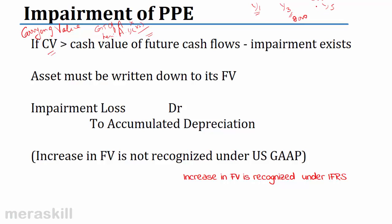Then I look at the future cash flows. In year 4, I expect the cash flow from operating this machine to be $2,000, and in year 5, I expect it to be $3,000. So $2,000 plus $3,000 gives $5,000. The future cash flows I will get from this machine is only $5,000, but the carrying value of the machine is $8,000. That means the book value is much more than the benefit I am going to get. Therefore, there is an impairment to the extent of $3,000 — a loss in value of $3,000.